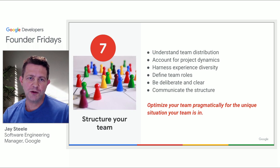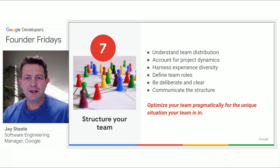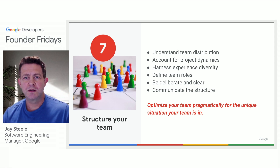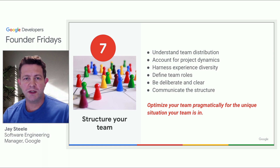Number seven: structure your team. This one seems obvious, but it can get tricky when you're adding the dynamics of a highly distributed team. There are some important things to consider here. First, seniority and experience — your team will have junior members and senior members, and how you divide those people around the team will play a key factor.